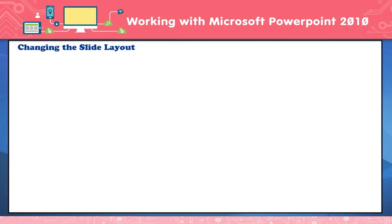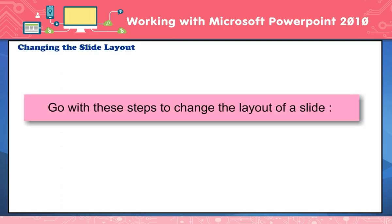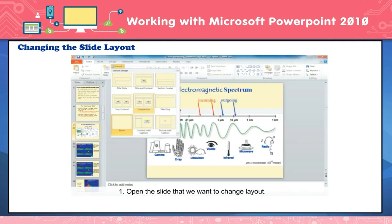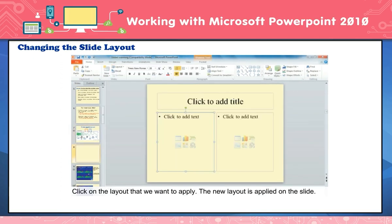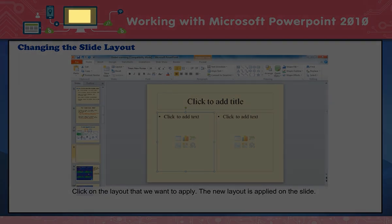Changing the slide layout. To change the layout of a slide: open the slide whose layout you want to change. Click on the Home tab. Click on the Layout button. A drop-down list of various layouts will appear. Click on the layout you want to apply. The new layout is applied to the slide.